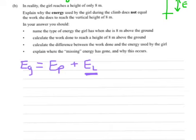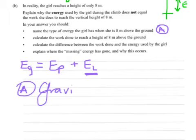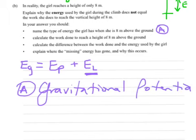We'll come back to that. In our answer, we should name the type of energy the girl has when she was 8 metres above the ground. That type of energy is gravitational potential energy.